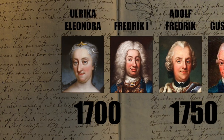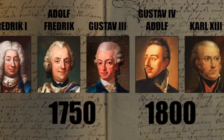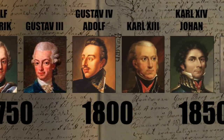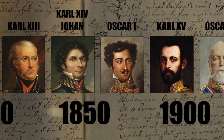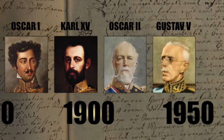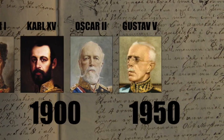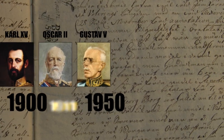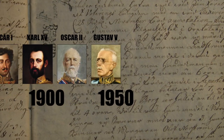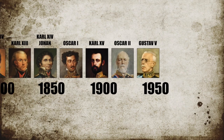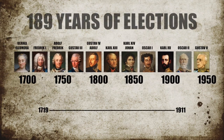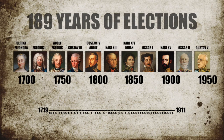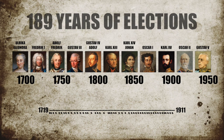The Diet, or Riksdag of Estates, was replaced by a bicameral parliament in 1866. But Theorell's study proceeds until just before the next big electoral system modernization in 1911, when proportional representation was introduced. In the covered 189 years, 54 parliamentary elections took place, and in each case, petitions were filed by unhappy voters.